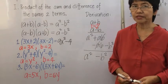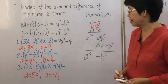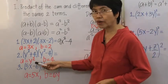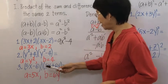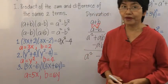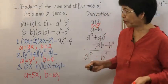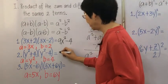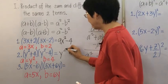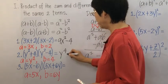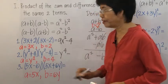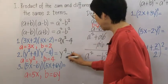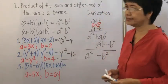Example 2: y squared plus 4 times y squared minus 4. Here a is equal to y squared and b is equal to 4. You square y squared to get y to the fourth, minus the square of 4 which is 16. So the answer is y to the fourth minus 16.